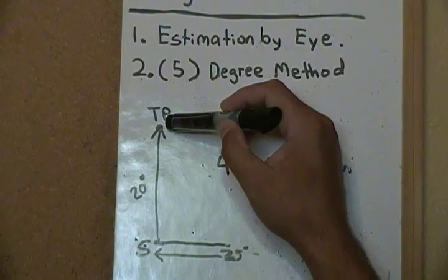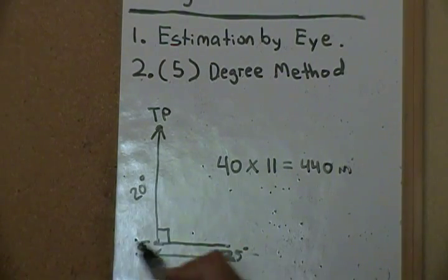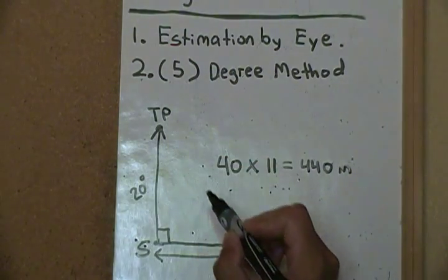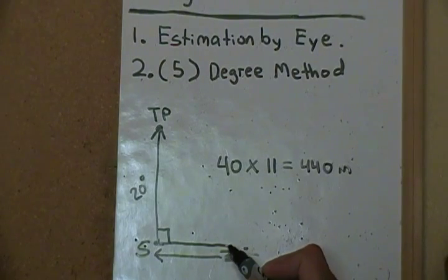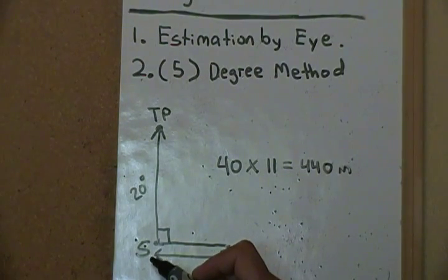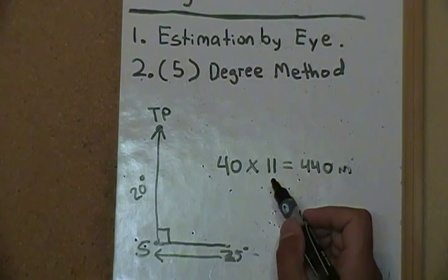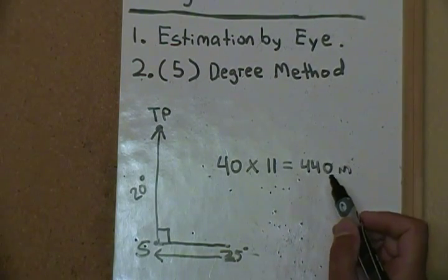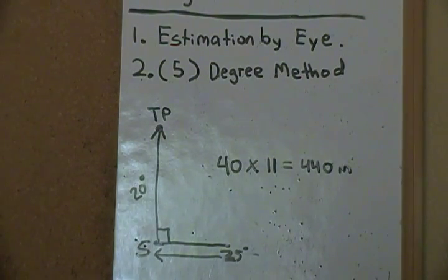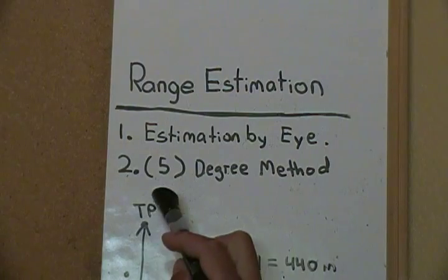So again, one more time real quick, simplified version. Five degree method: you shoot an azimuth to your target point, you walk in a 90 degree offset from your starting point, either direction, until you're five degrees difference. How do you know you're five degrees? You shoot one more azimuth to your target point until you're five degrees difference. Turn around, walk back to your start point counting your paces, not a pace count. If you want to know what a pace count is, look at my other video. Counting your paces, take your number of paces, multiply by 11, get your answer in meters, and that's the closest guess that you're going to get without rangefinders. So again, this has been range estimation: estimation by eye and the five degree method.